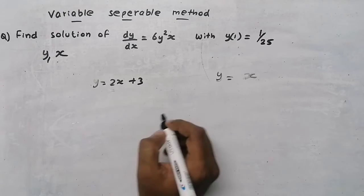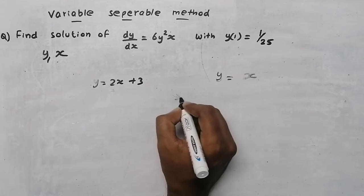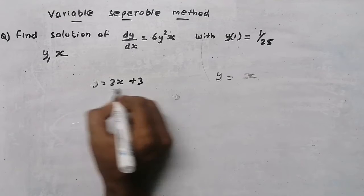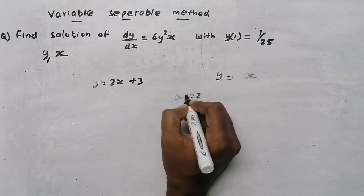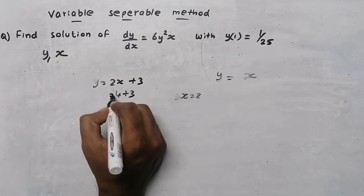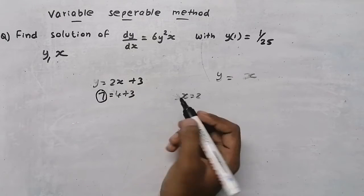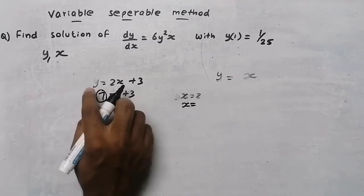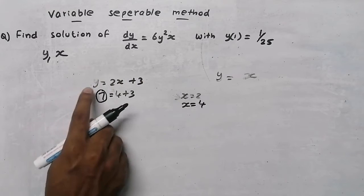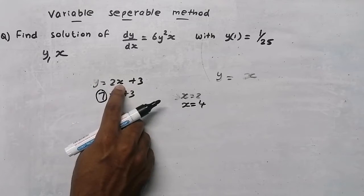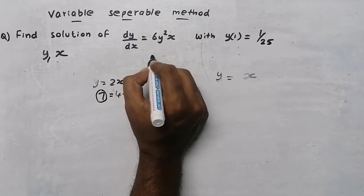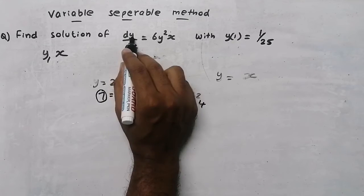To understand why we find a solution, consider the linear equation y equals 2x plus 3. If someone asks for the value of y when x equals 2, I substitute: 2 times 2 is 4, plus 3 is 7. Similarly, if asked for y when x equals 4, I substitute the same way. Here y depends on x — as x varies, y also varies.